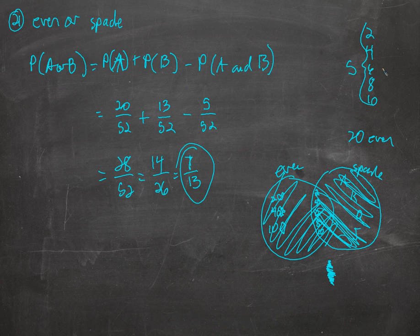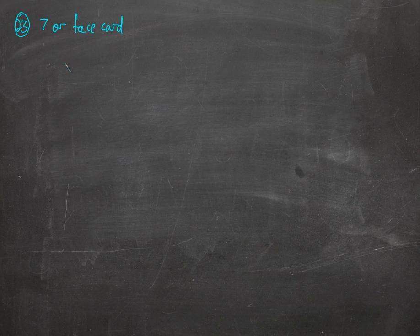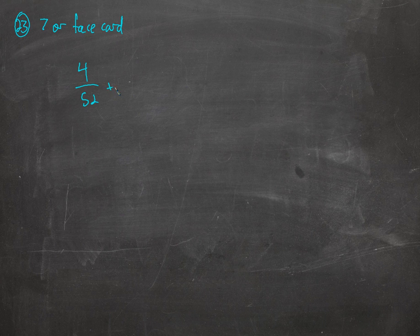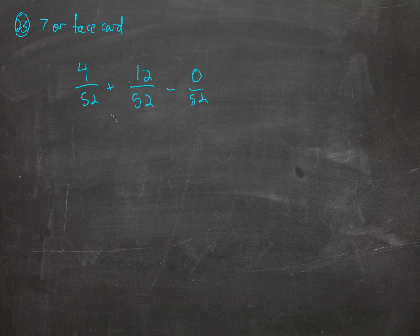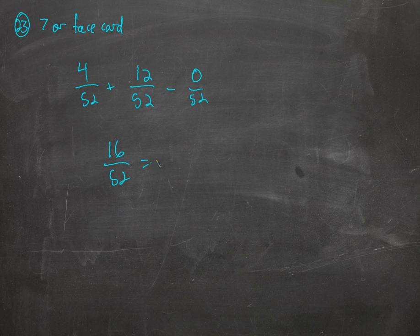What's the probability of getting a 7 or a face card? P(A) plus P(B) minus P(A and B). The probability of getting a 7: there are 4 sevens out of 52 cards. The probability of getting a face card: there are 3 in each suit, 4 suits, so 12 face cards. Minus the probability of getting a 7 that's also a face card — well, there are no 7s that are also face cards. A face card by definition is not a number card. So there's no overlap. Together we have 16 out of 52, which simplifies to 4 out of 13.